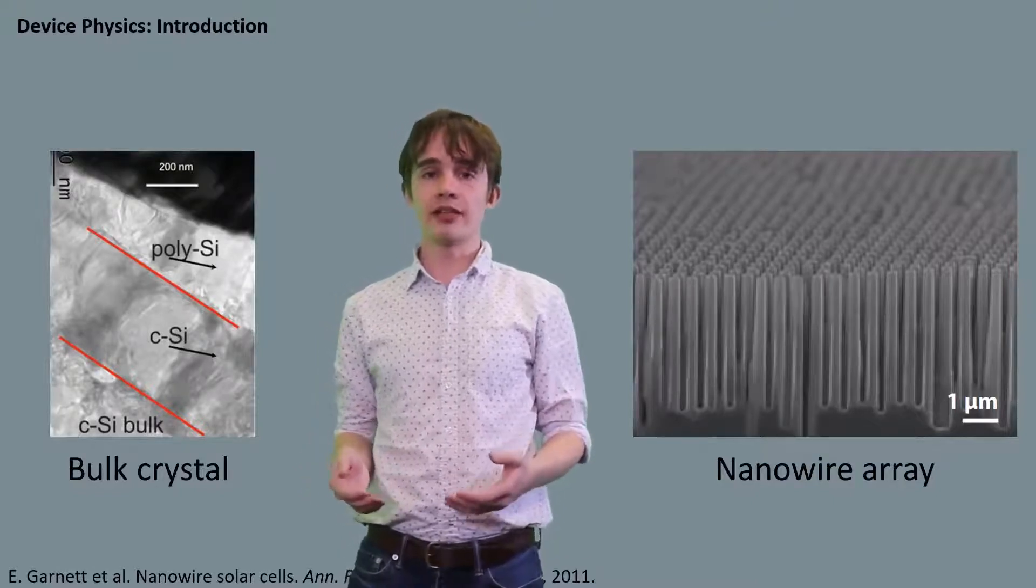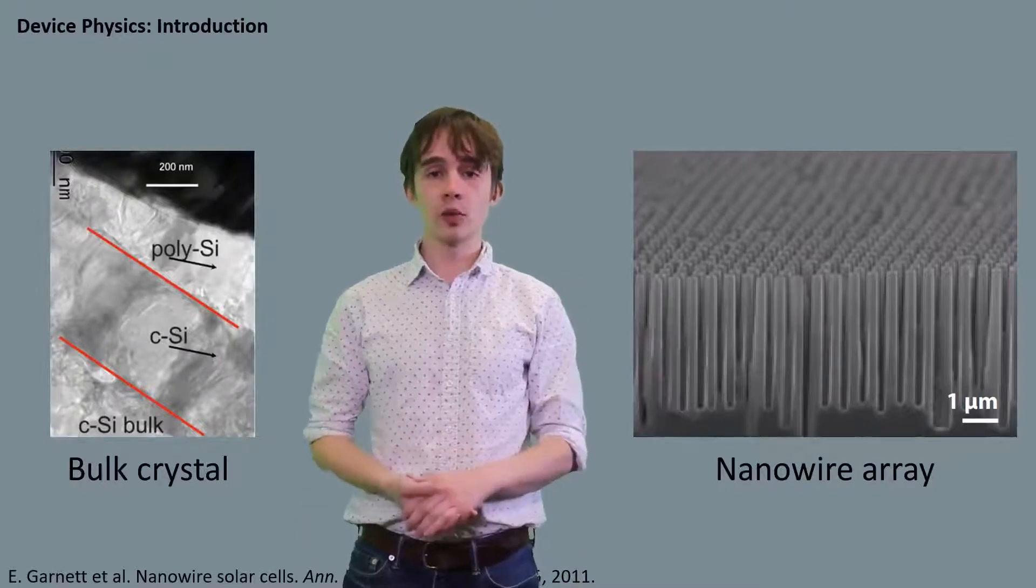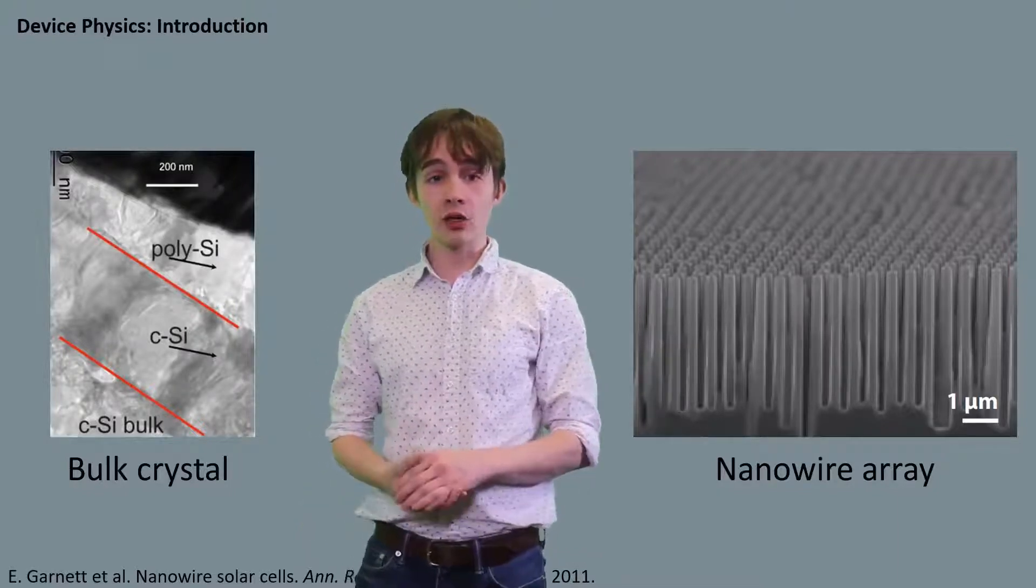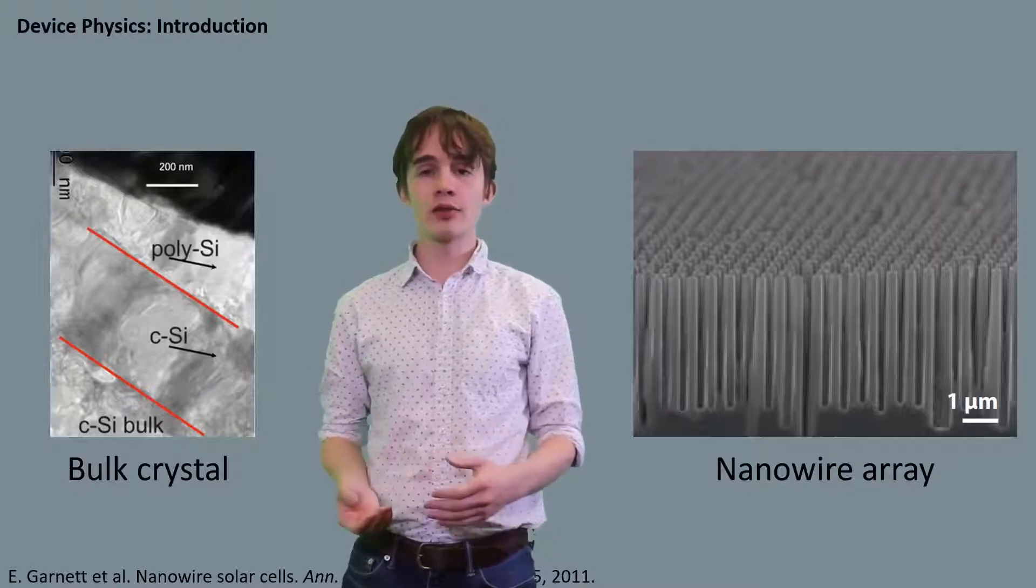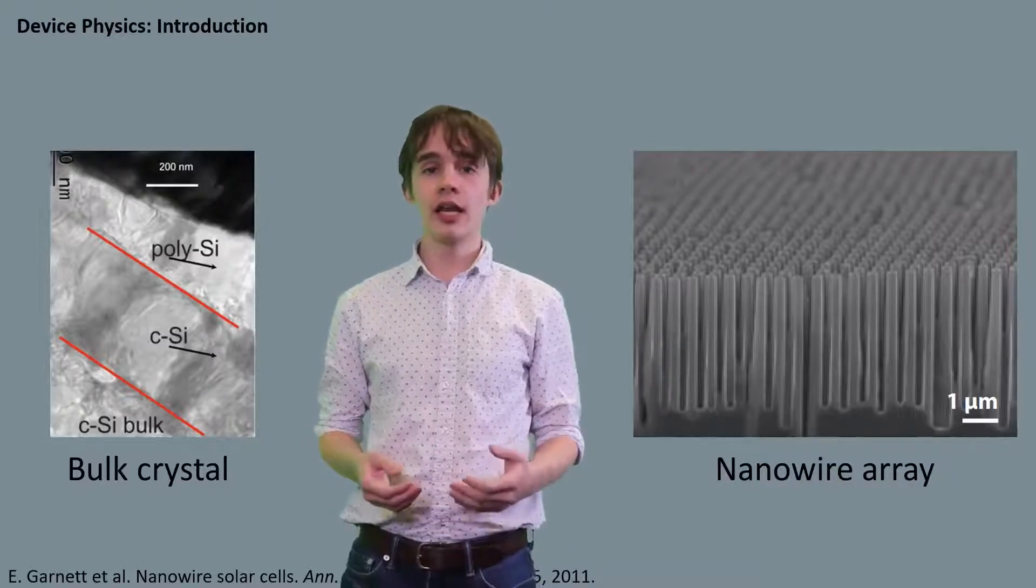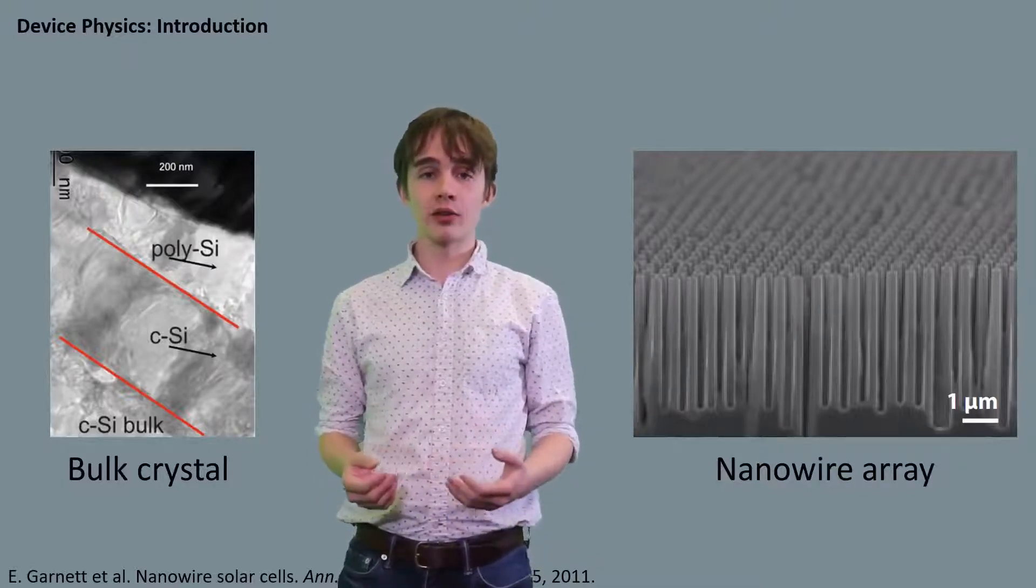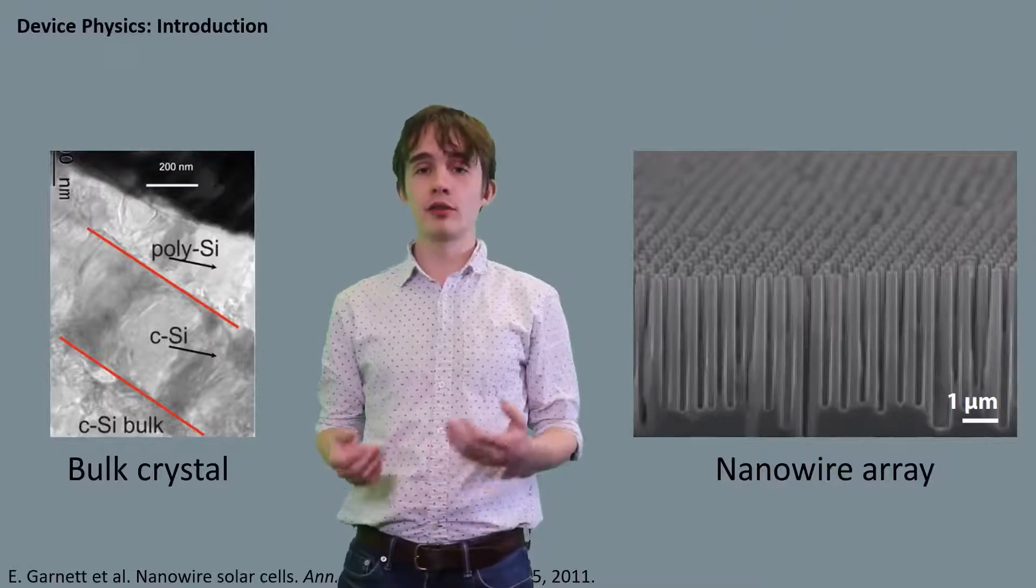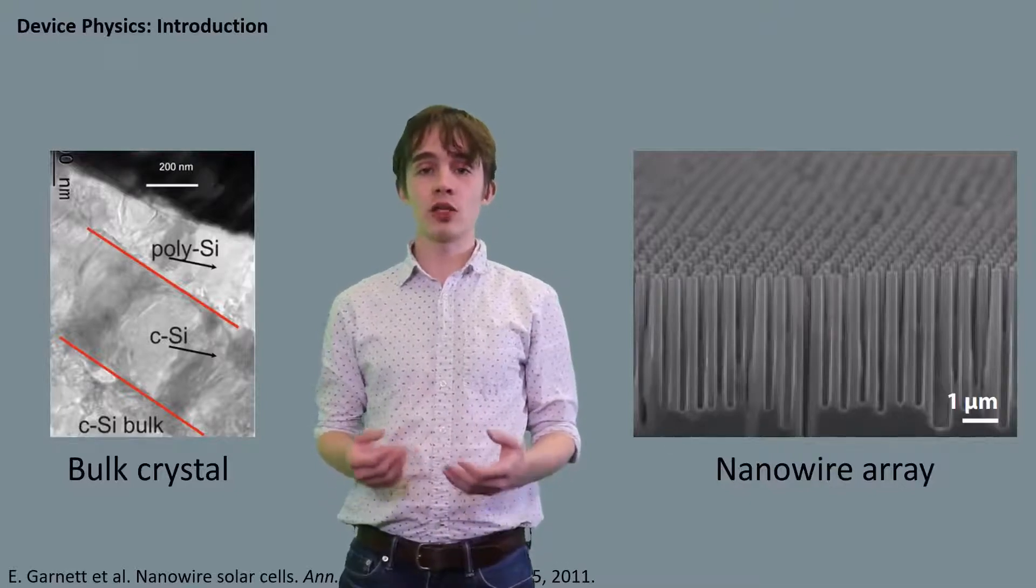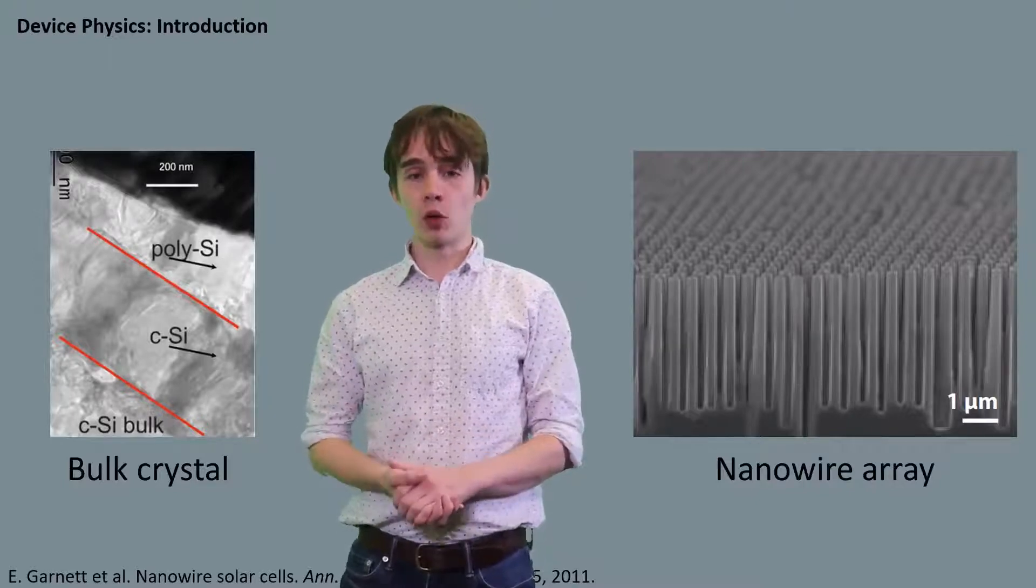These nanowires typically range in diameter from 10 nanometers to 1 micron. Considerable research has also been done on single nanowire cells, and these are useful for understanding the physical mechanisms going on in a nanowire. However, since the photocurrent is dependent on the surface area, all of the practical devices that have been demonstrated for non-concentrated light have used arrays of many nanowires. These devices will be the focus of this video.